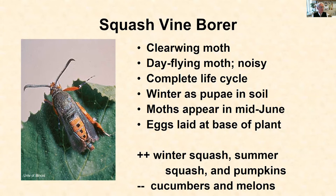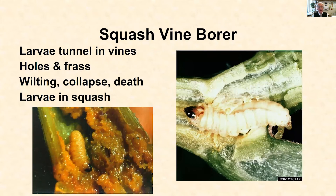Some people are able to see these moths. They're big, they're gaudy, they fly during the daytime, and they're noisy. Actually, they mimic a wasp — they sound and behave a bit like a wasp flying around in the vegetable patch looking to lay eggs on the winter squash, summer squash, and pumpkins. They could lay eggs on cucumbers and melons in the cucurbit family, but more often it's the squash and pumpkins. The eggs hatch into little tiny larvae that chew a hole into the stem of the plant. Usually laid at the base, the caterpillar then tunnels inside the plant and feeds inside the stalk. That stalk will become quite hollow and mushy, full of moist sawdust-like frass that the caterpillar has chewed up and spit out.